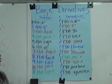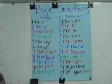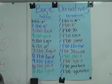Number seven is f(x) equals log base a of x. Its prime is 1 over ln(a) times x.